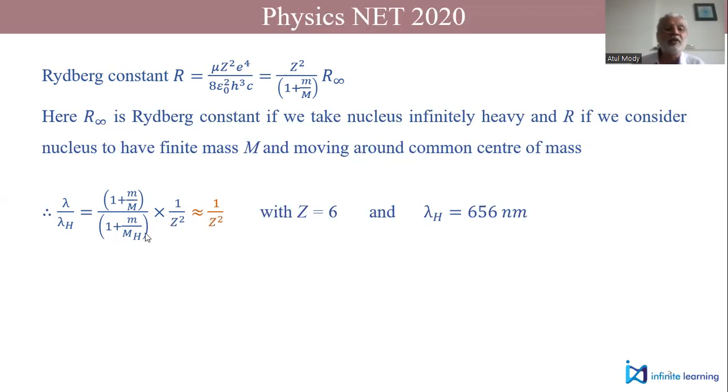Now in this case, it so happens that these factors compared to 1/Z² are almost negligible, so this ratio of wavelength will be almost nearly 1/Z² with Z equal to 6. Now, λ_H is 656 nanometers, so λ will be λ_H divided by Z², which is 36, and that gives you an answer of 18.2 nanometers, and that was our option.